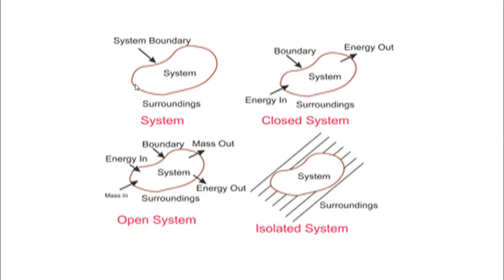A system could be an open system, a closed system, or an isolated system. By open system, we mean that mass enters and mass leaves the system. So if there is an entry of mass into the system and mass is exiting the system, then we can say that the system is an open system.